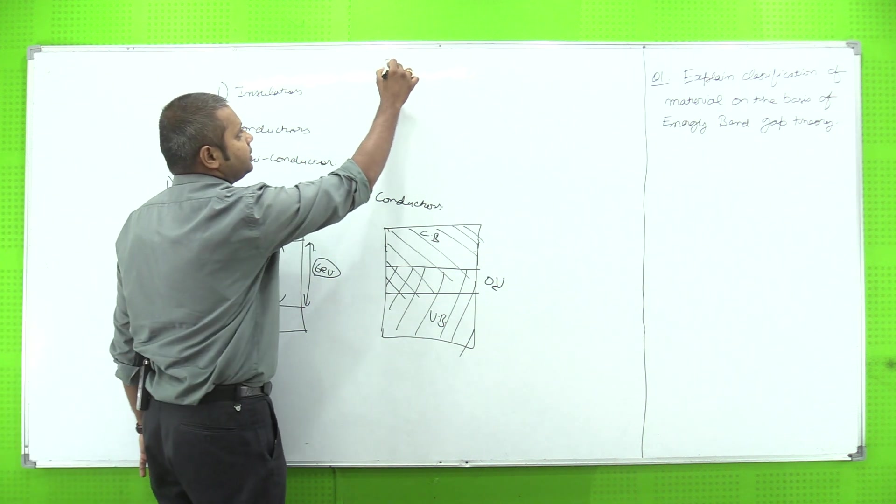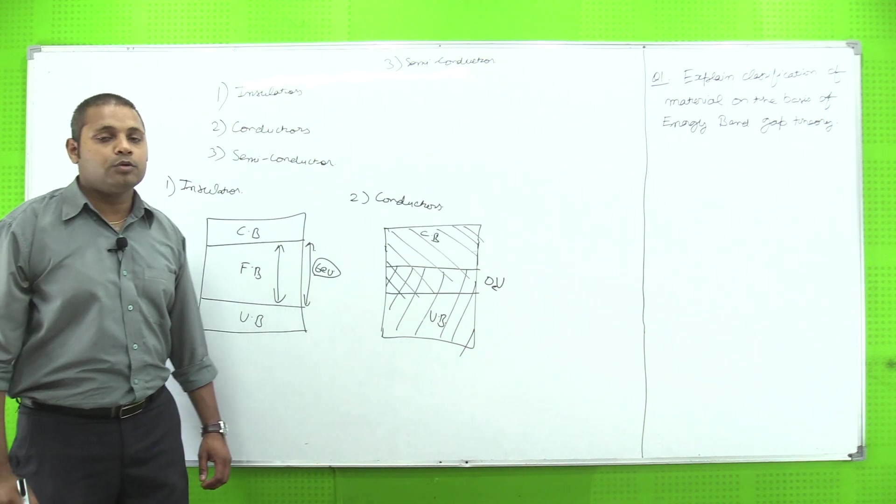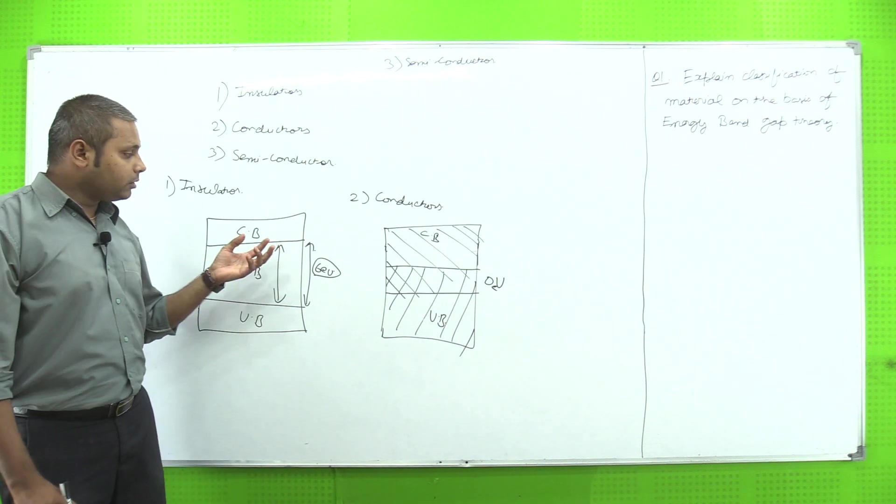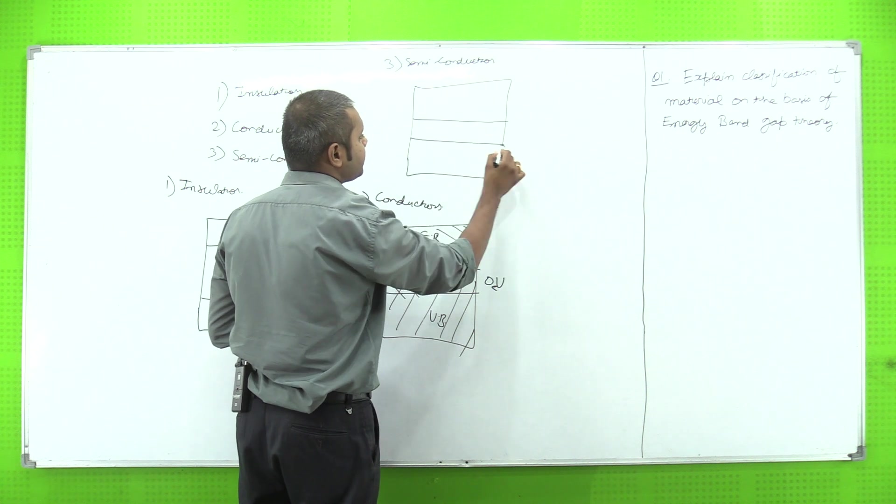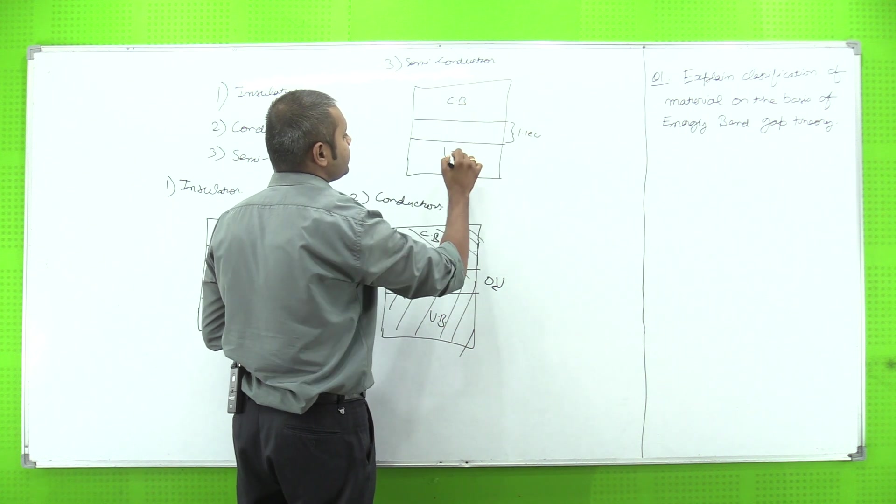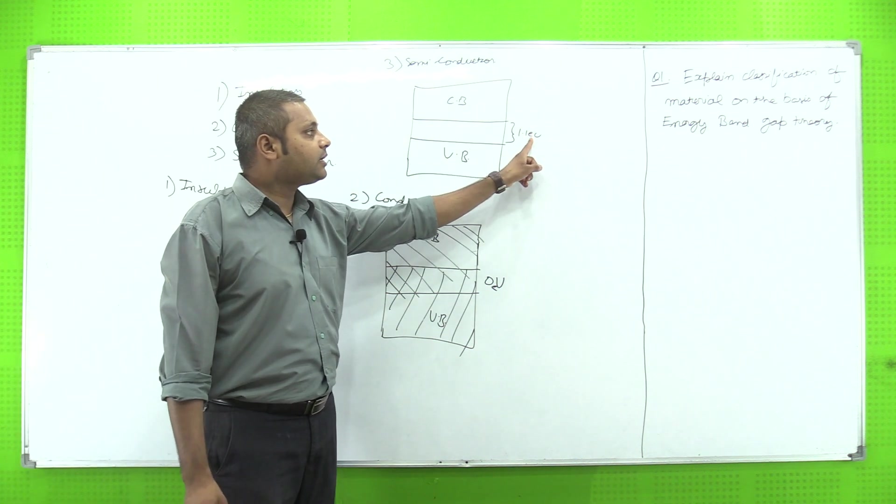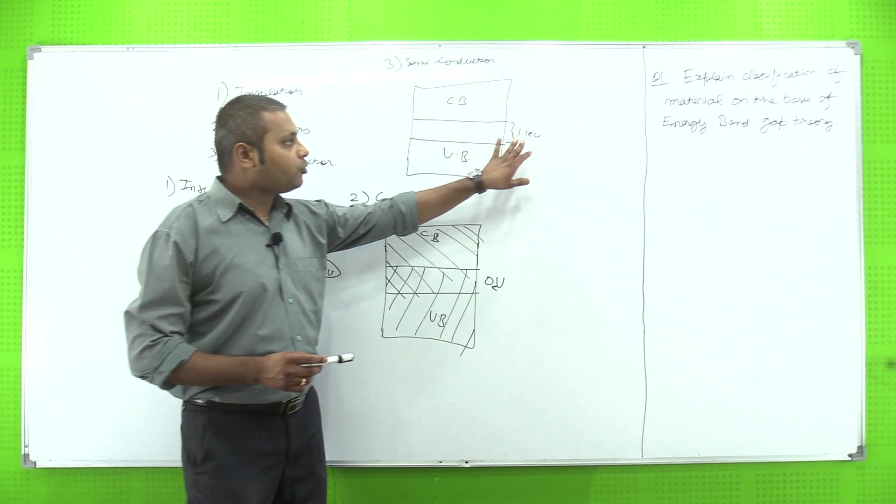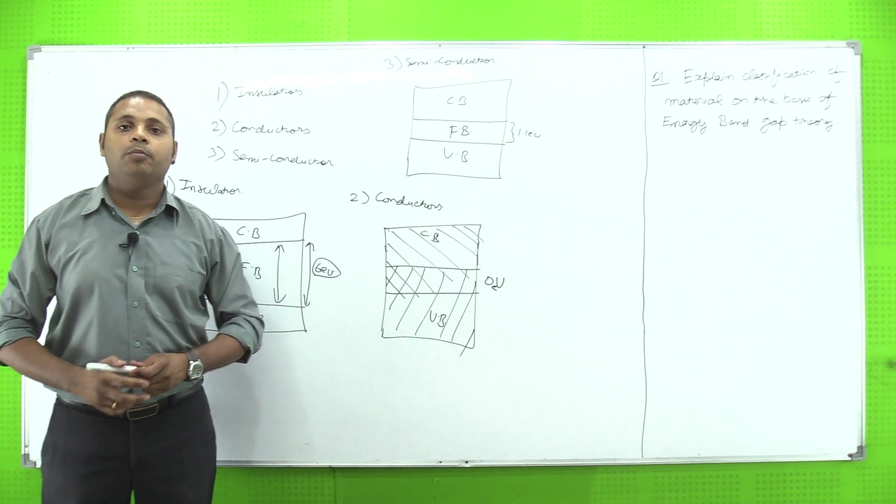Now the last one, third one is semiconductor. Jaisa maine pehle discuss kiya ki semiconductor wo material hoti hai jin ki property conductors aur insulators ke beech mein aati hai. Semiconductor is a material - mujhe energy band gap diagram se pata chal raha hai wo material hai jin ka forbidden gap 1.1 electron volt ki range mein hai.